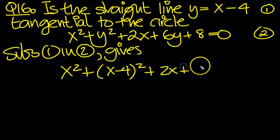there's the y squared, plus 2x, plus 6 times y, x minus 4, plus 8 equals 0.